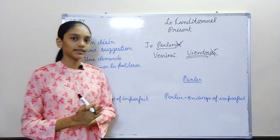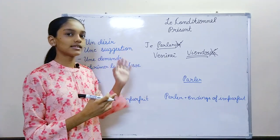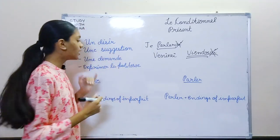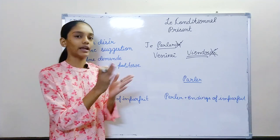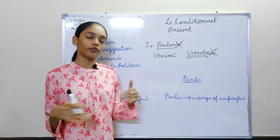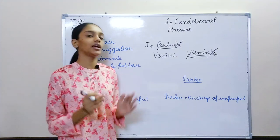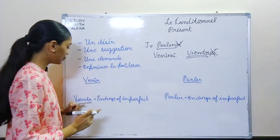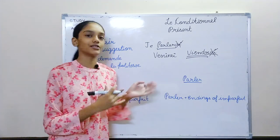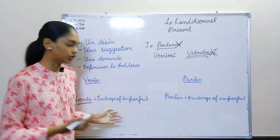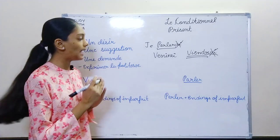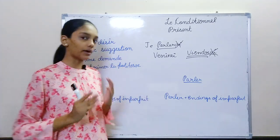You can remember it like this: for all the verbs that are exceptions in future simple, you write the radical that is left. For other verbs, you write the infinitive. So for venir, you write viendra, and for parler, you write parler because it is not an exception. After that, both are the same — you add the endings of imparfait, not imperatif — imparfait.